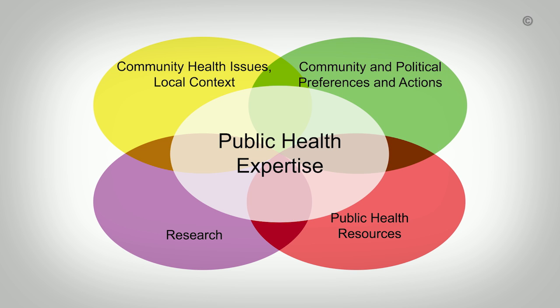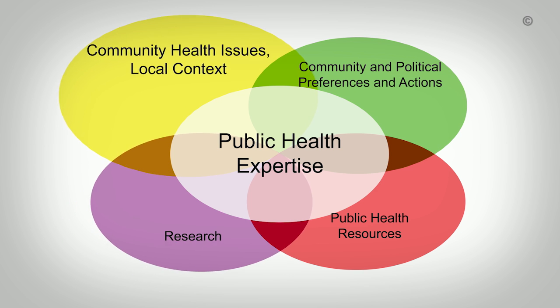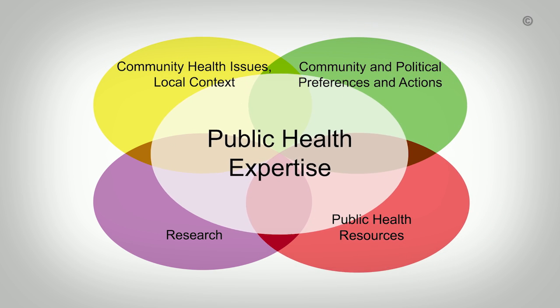The model shows all of the ovals to be equal in size, suggesting each type of evidence exerts an equal amount of influence on the decision, but this is not always the case. The EIDM model is flexible and allows for differences in the importance of the various sources of evidence across settings and circumstances. The inclusion of evidence related to community health issues and local context, as well as community and political preferences, recognizes that practice and policy decisions will likely vary across public health organizations or geographic locations, even when the same research evidence and similar public health resources are available.